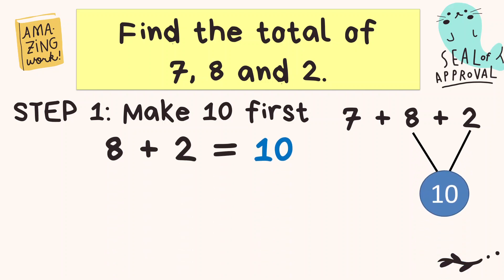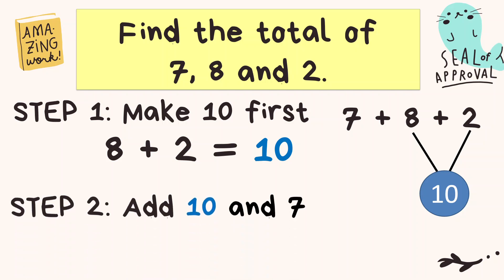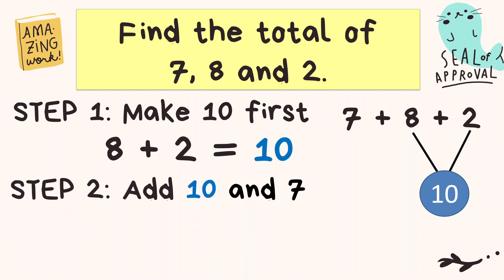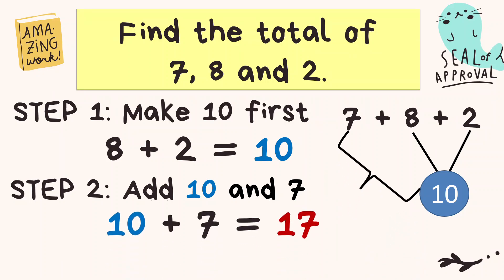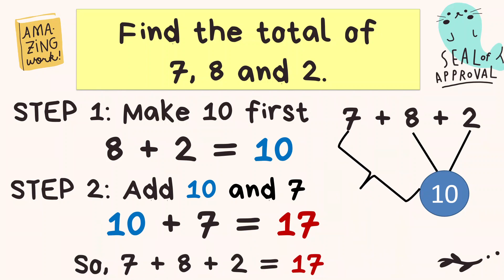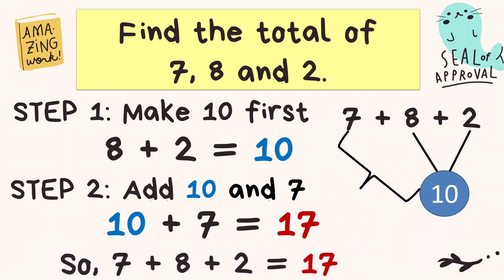So what's the second step? Let's now combine seven and ten. Ten and seven is equal to seventeen. So the total of seven, eight, and two is seventeen.